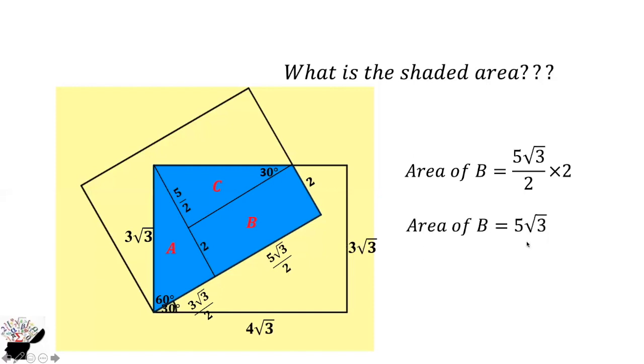We can find C. We have the base as 5/2 and the height as 5√3/2. Base times height gives us 25√3/8.